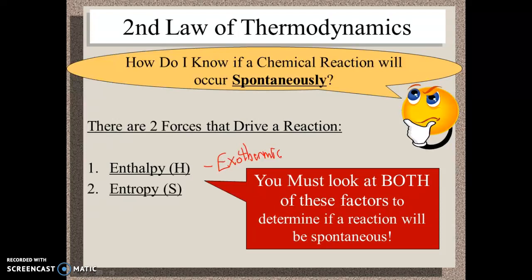But the other important drive is something called entropy. You have to look at both of these factors to decide if a reaction is going to be spontaneous or not. So what is this entropy thing? We've already talked in class that the symbol for enthalpy is H because E is energy, H is enthalpy. And entropy — another E word — has the symbol S.